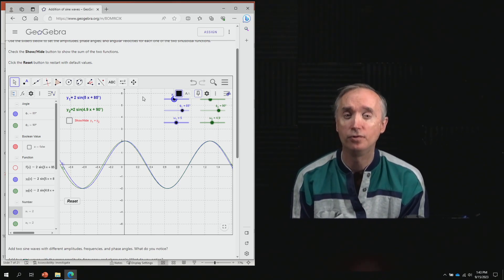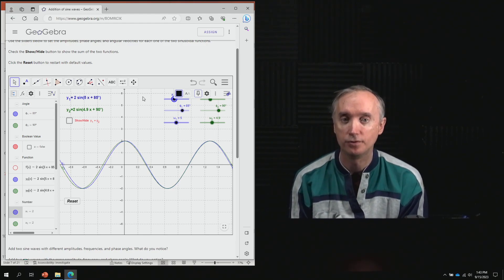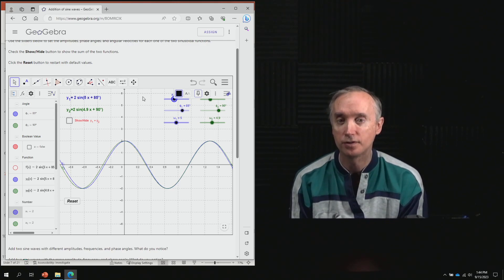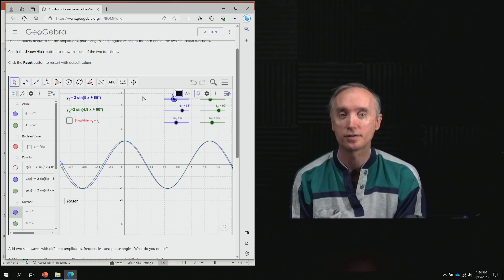Now what we want to do though, is we want both waves to have the same amplitude in order to get total constructive and destructive interference, which is what we're interested in.